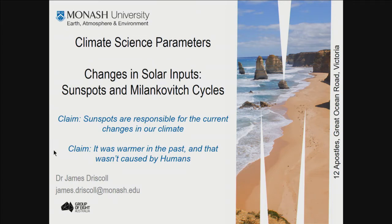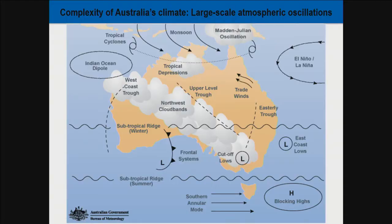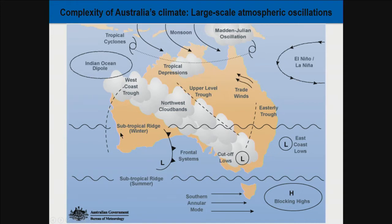A couple of things to point out early: Australia's climate is pretty complex. The reason it's complex is because we're surrounded by ocean and we're a pretty big island — about 4,000 kilometres east to west and 3,000 kilometres north to south. We're affected by large climatic oscillations such as El Niño, La Niña, and the Indian Ocean Dipole.